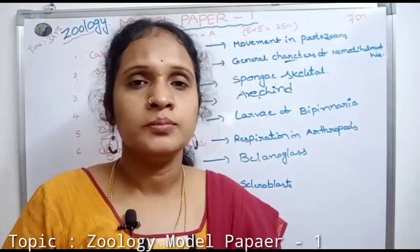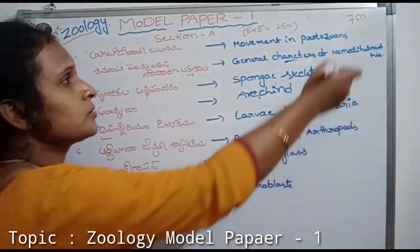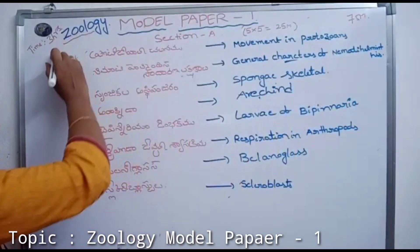In this video, we will discuss the zoology model paper. Total marks is 75 marks and time is 3 hours.